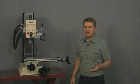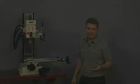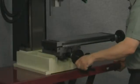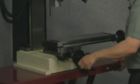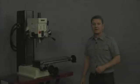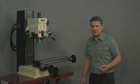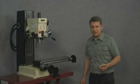Now for the y-axis travel, we first need to run the table all the way to the front. And now we make a mark between the saddle and the base of the machine.